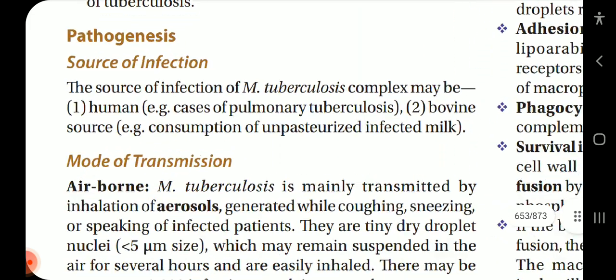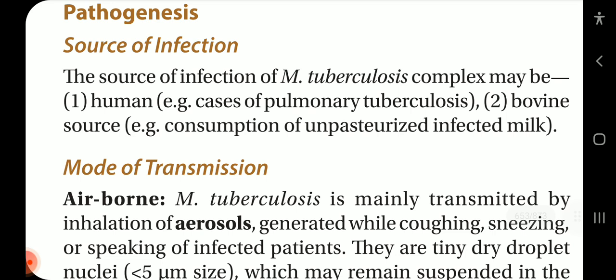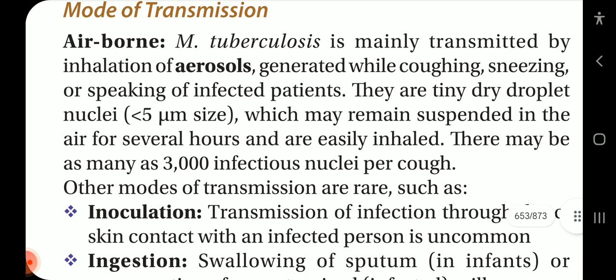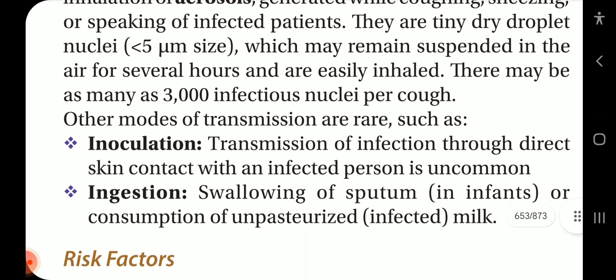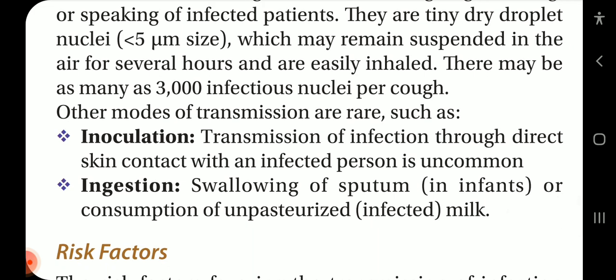Pathogenesis. Source of infection: the source of MTB complex may be human. In the case of pulmonary tuberculosis, it may also include consumption of unpasteurized infected milk. Mode of transmission: MTB is mainly transmitted by inhalation of aerosols generated while coughing, sneezing, or speaking by infected patients. These are tiny dry droplet nuclei less than 5 micrometers in size, which may remain suspended in the air for several hours and are easily inhaled.